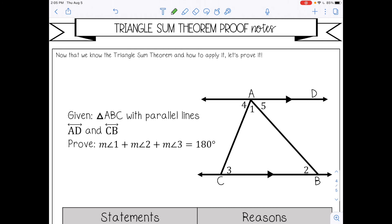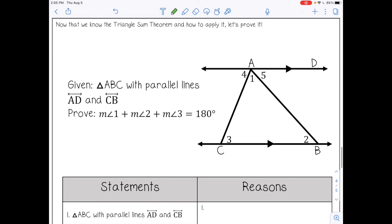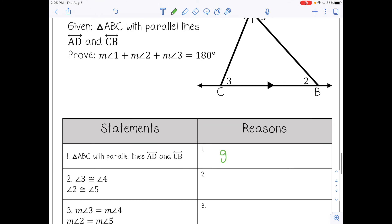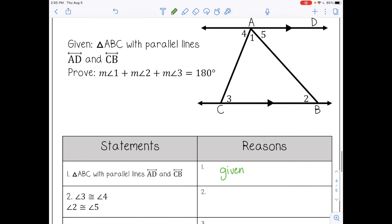Let's look at the proof. Why are the three angles in a triangle equal to 180? We're given a triangle here, and we have parallel lines on top and on bottom. And we want to prove that the three interior angle measures add up to 180. Number one, we have triangle ABC with parallel lines AD and CB. We were given that information. Number two says that angle 3 and angle 4 are congruent. And it also says angle 2 and angle 5 are congruent. The reason these are congruent is because they're alternate interior angles.